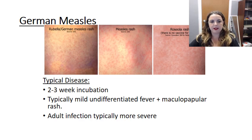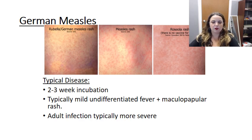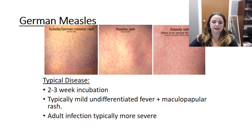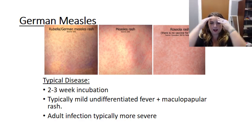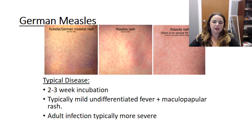So what is German measles? German measles, measles virus, and roseola — which is caused by a human herpesvirus — all form this kind of rash, but there are slight differences in the way they present. Roseola tends to start on the neck, tends to be more pink, and shows up after the fever subsides. Measles tends to start around the hairline and move down. Rubella tends to start on the face and then move down. There are also differences in whether or not it's pruritic or non-pruritic.